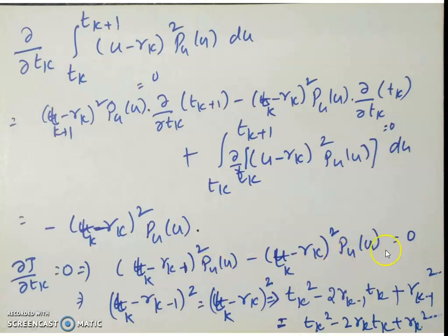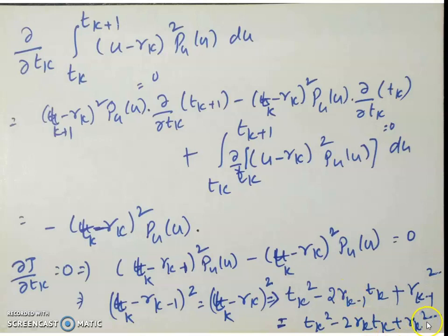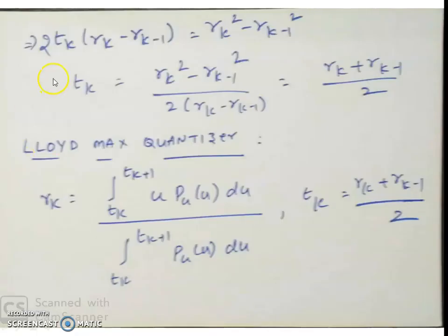Since pu(u) cancels, we need (tk minus rk−1)² = (tk minus rk)². Expanding and simplifying: tk² + rk−1² − 2·tk·rk−1 = tk² + rk² − 2·tk·rk. This gives 2·tk·(rk minus rk−1) = rk² − rk−1², and therefore tk = (rk + rk−1) / 2. So independent of pu(u), tk is always the midpoint of rk and rk−1.